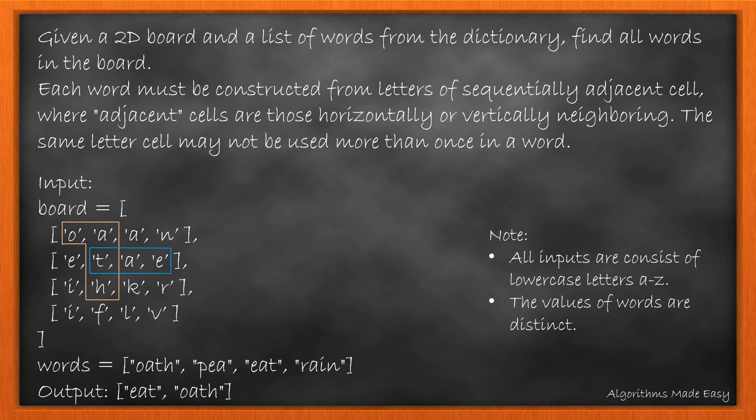Given a 2D board and a list of words from the dictionary, we need to find all words in the board. Each word must be constructed from the letters of sequentially adjacent cells where adjacent cells are those horizontally and vertically neighboring. And the same letter must not be used more than once in a word.